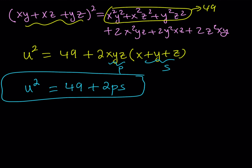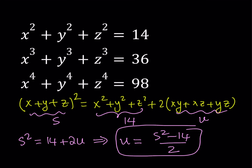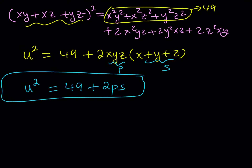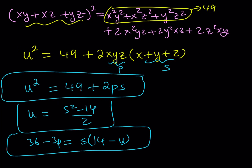Now we have a system in three variables S, U, and P. We have U squared equals 49 plus 2PS; we have 36 minus 3P equals S times (14 minus U); and we have U equals (S squared minus 14) over 2. We can replace U with the expression in S to get a relationship between P and S, and then substitute again to solve the system.